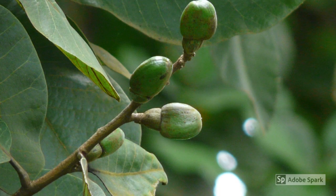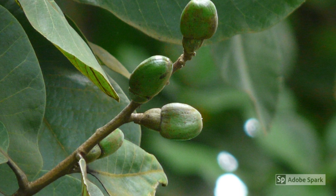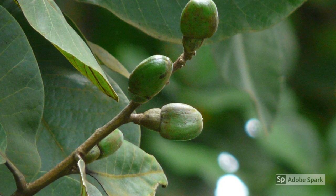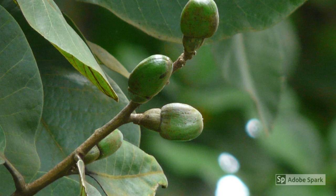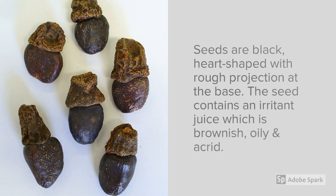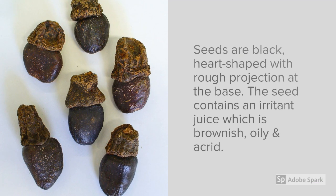You can see the fruit of Semicarpus anacardium in the picture. Semicarpus is closely related to the family of cashew nut, because of which it is also referred to as the cousin of cashew nut. Not only humans but also the plants have cousins! The seeds are black, heart-shaped with rough projections at the base, as you can see in the picture by the side.